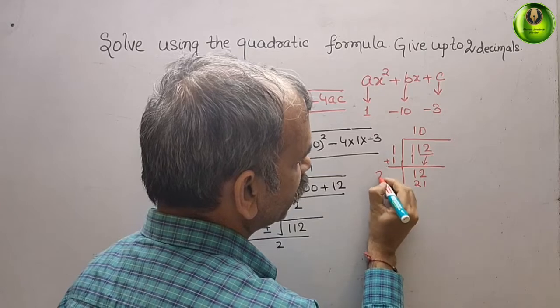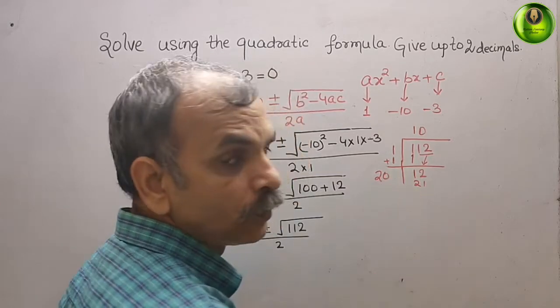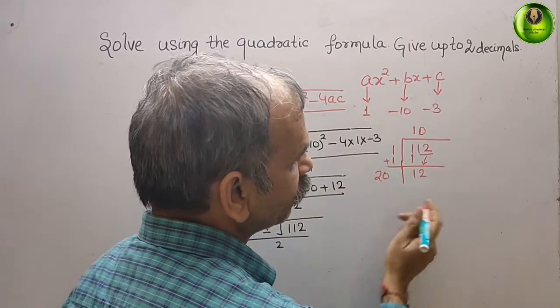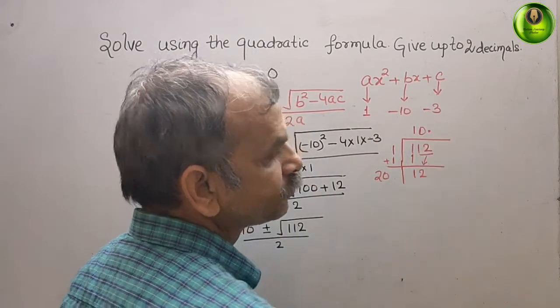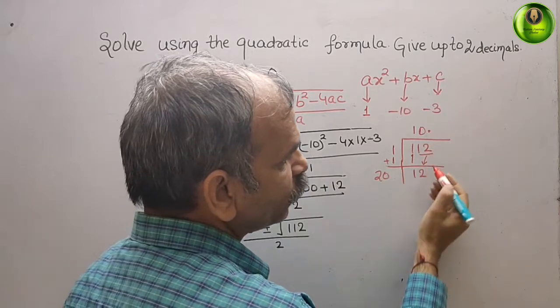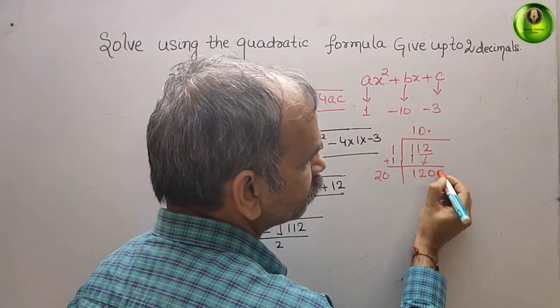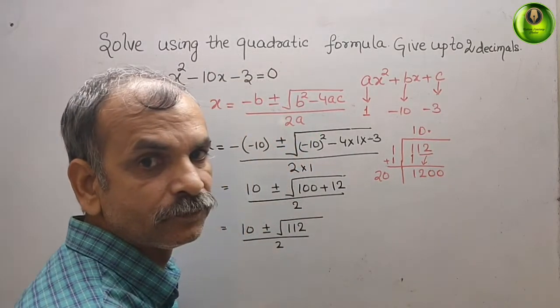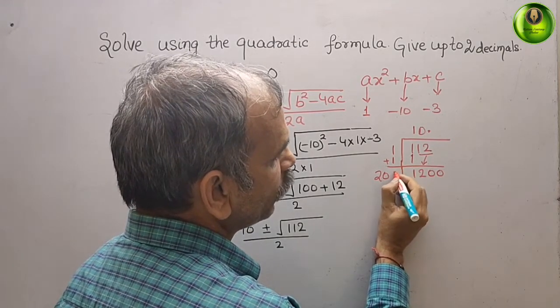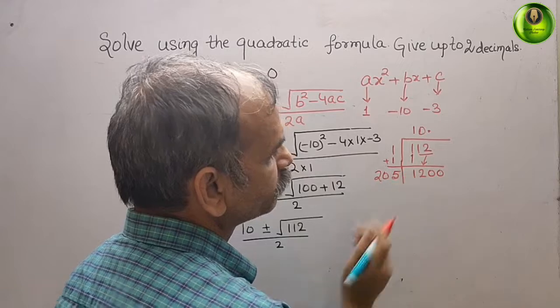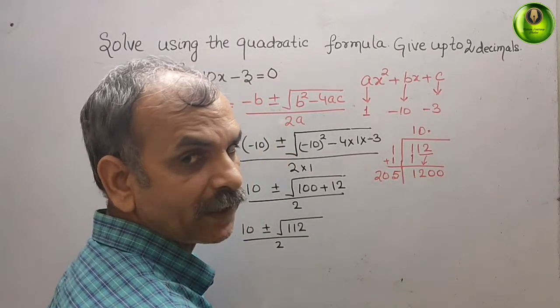And here also put 0. So you get 20. After that, we have to put a point here. When we put the point here, you get 2 zeros here. Now you can see it will go 5 times.